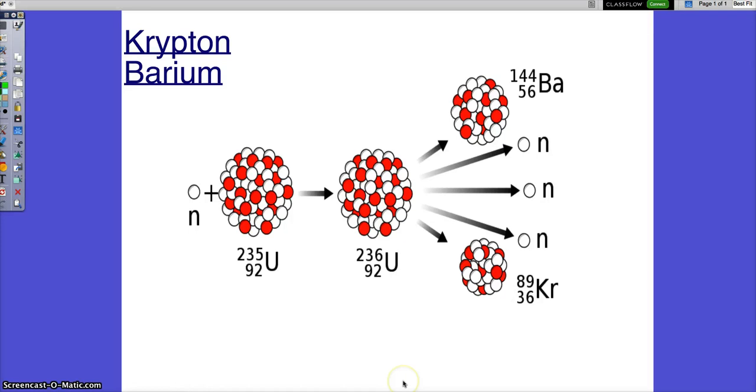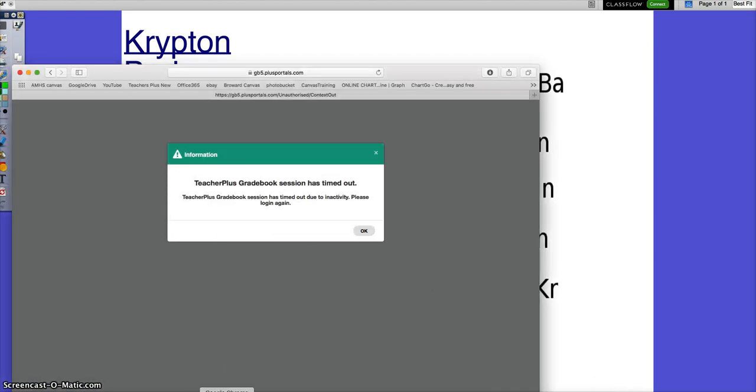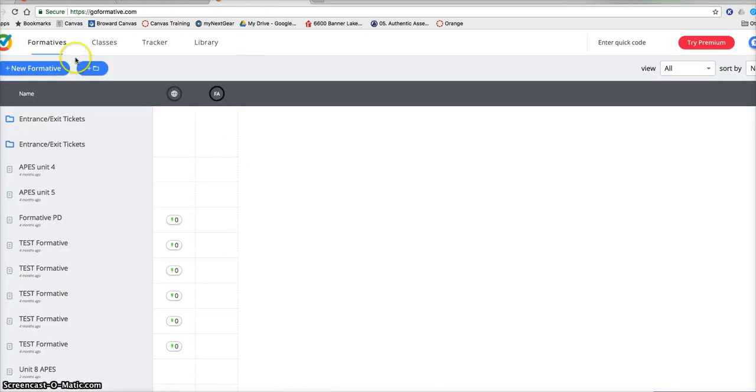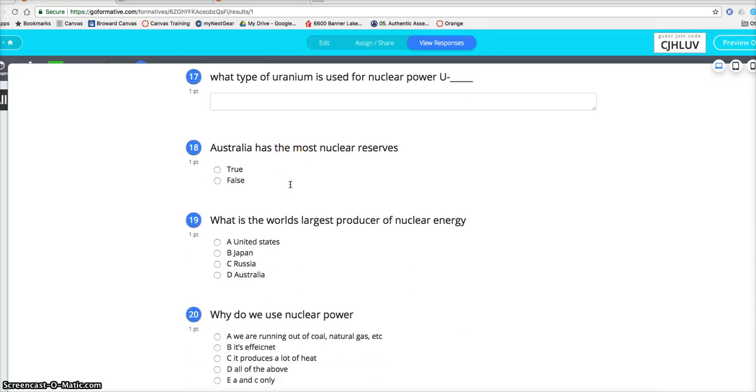Somehow you still make more and more and more of that. Remember, it's an uncontrollable chain reaction. So try to just remember that as what happens during fission. If not, explain it the way you do, and you'll still be good. We'll go back here to formative.